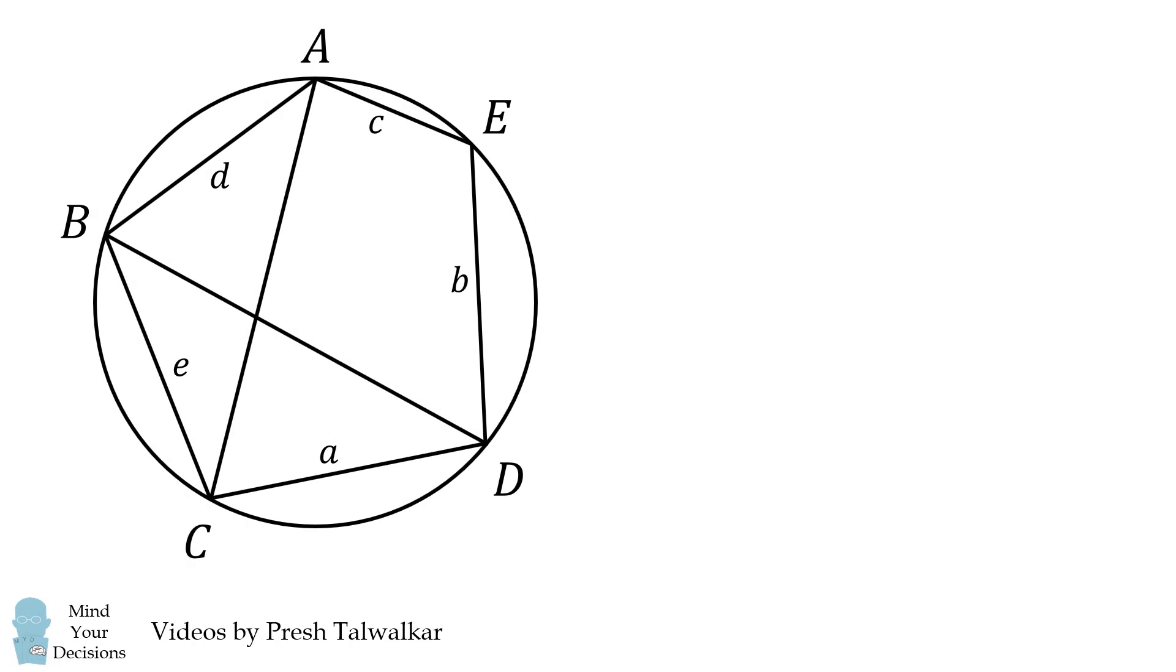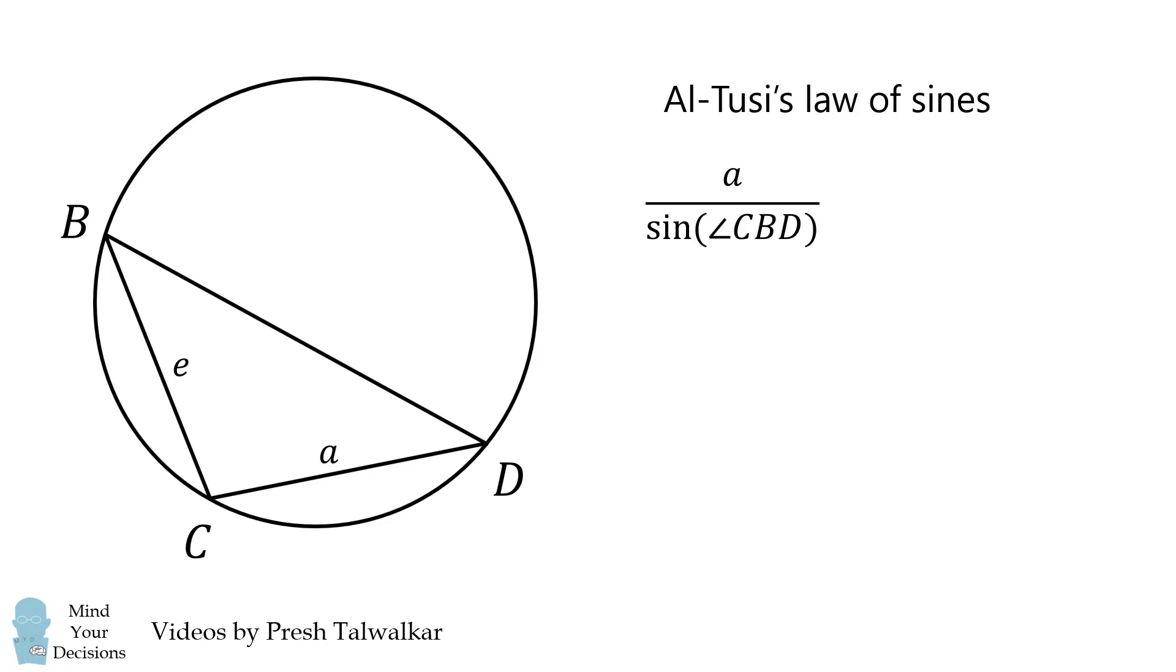There's a lot going on in the diagram, so let's focus on triangle BCD. By the Law of Sines, side A divided by the sine of the opposite angle CBD is equal to side E divided by its opposite angle BDC.